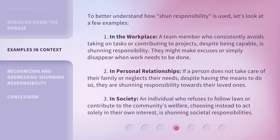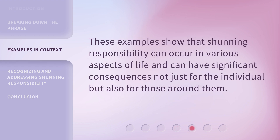Three: in society, an individual who refuses to follow laws or contribute to the community's welfare, choosing instead to act solely in their own interest, is shunning societal responsibilities. These examples show that shunning responsibility can occur in various aspects of life and can have significant consequences, not just for the individual but also for those around them.